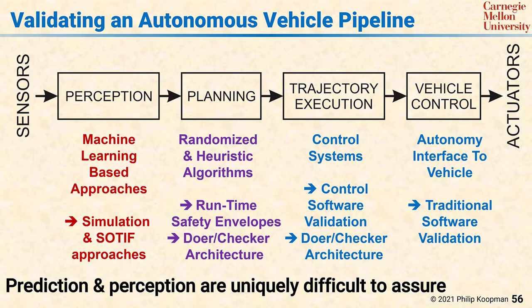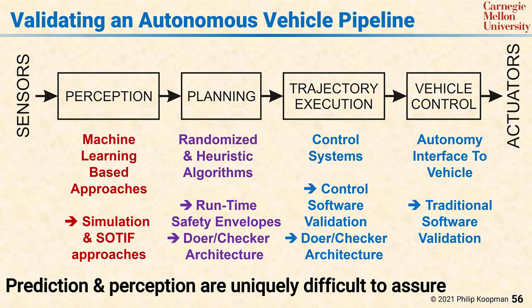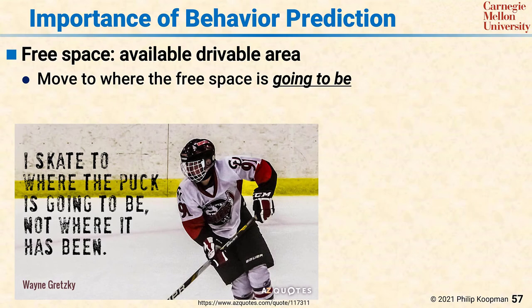A uniquely challenging aspect of this technology is that perception and predictions of future behaviors based on perception and other factors are uniquely difficult to validate and provide safety assurances for. Predicting the future behavior of objects is perhaps one of the most challenging and crucial parts of getting autonomous vehicles to be safe in practice. Simplistically, the idea is not so complicated — there's the idea of free space, this is space devoid of objects, and that defines the available drivable area. But for all but the slowest vehicles operating in the most benign environments, knowing where the free space is right now isn't good enough. You need to know where the free space is going to be when the vehicle gets there, and the more congested and chaotic the environment and the faster the vehicle is going, the more difficult that is to predict.